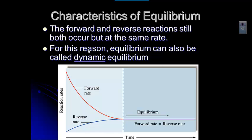But as you make more product, the reverse reaction starts to occur. Eventually, the rates of the forward and reverse reactions are equal. That's when we say a system is at equilibrium.